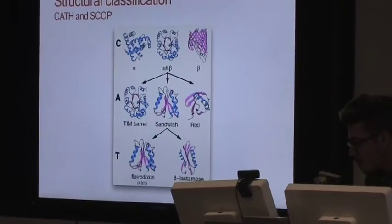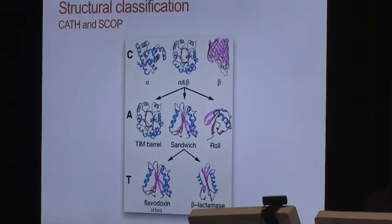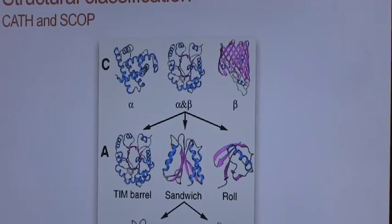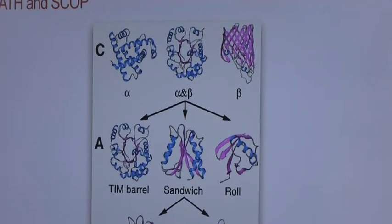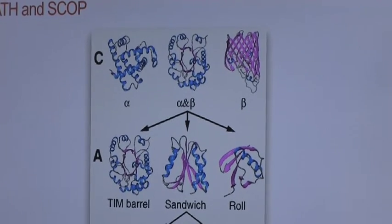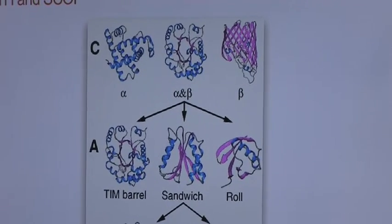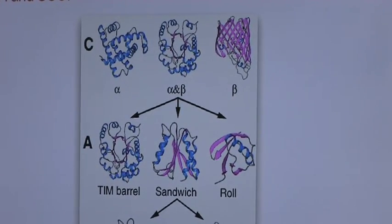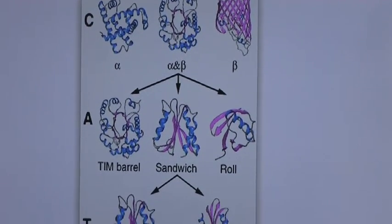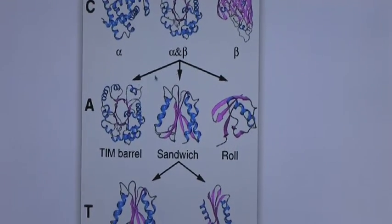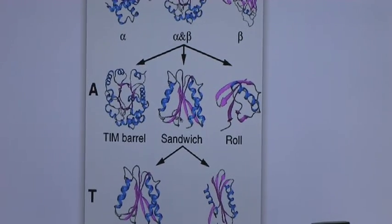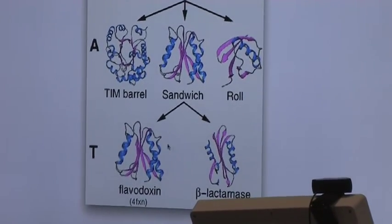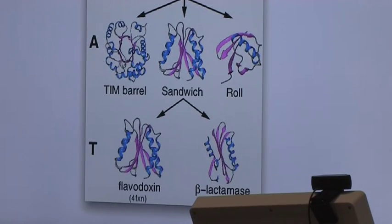There are two main structural classification databases. These are hierarchical. First level of classification, the C level, has to be with the class, which means the secondary structure content. So we have all the proteins that have mainly alpha helices, and we have proteins with beta sheets only, and we have a combination of both. And then a further classification is made accordingly to the overall shape of the protein without taking into account very fine details. And in the last level of classification, we have the topology, which is very sensitive to differences and similarities.